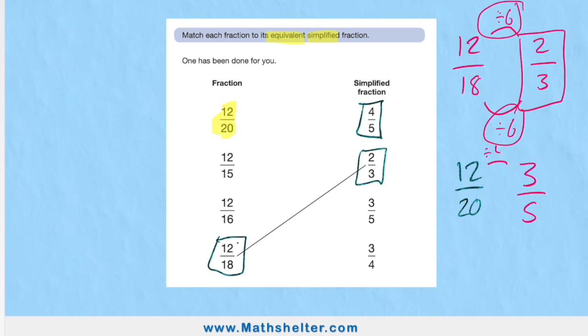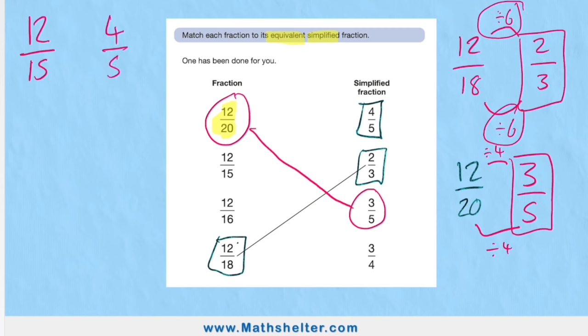Let's check 3/5. 12 down to 3 is divide by 4, and 20 down to 5 is divide by 4. Therefore 3/5 is the equivalent fraction of 12/20. Another one done for us, beautiful. Let's try another one, 12/15. Let's check it against 4/5. I think we're going to get lucky here.